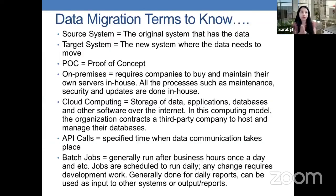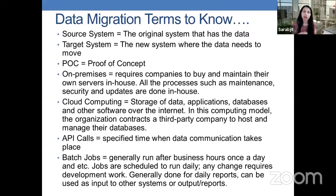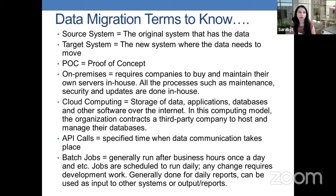Data migration terms that you guys will hear over and over again — I want to go through these so you are familiar with them and can understand what they mean. Source system is the original system that the data has been in. Target system is the new system where the data needs to go to. So in our Amazon example, your source system would be Amazon, your target system would be another system where we want to move all of that information into.